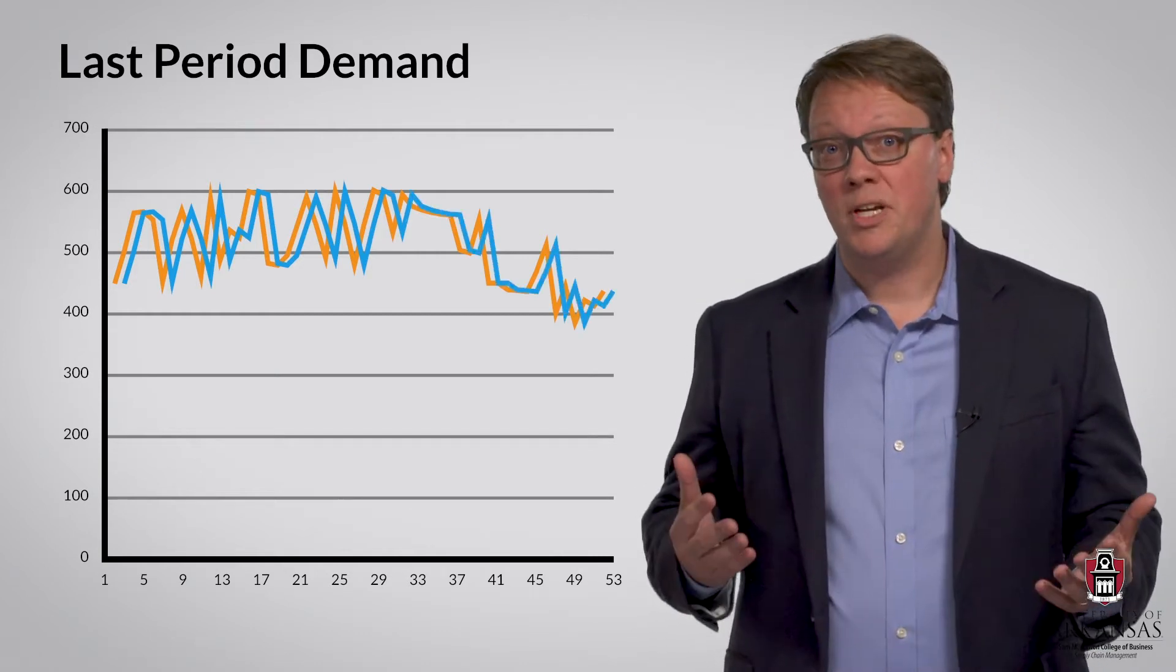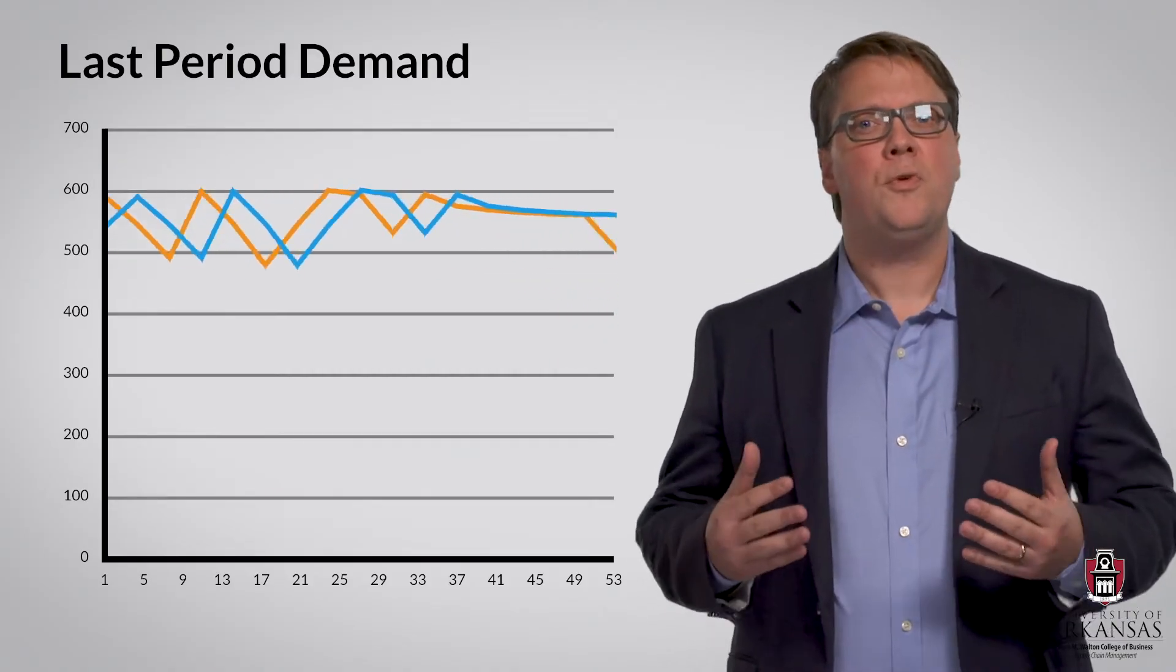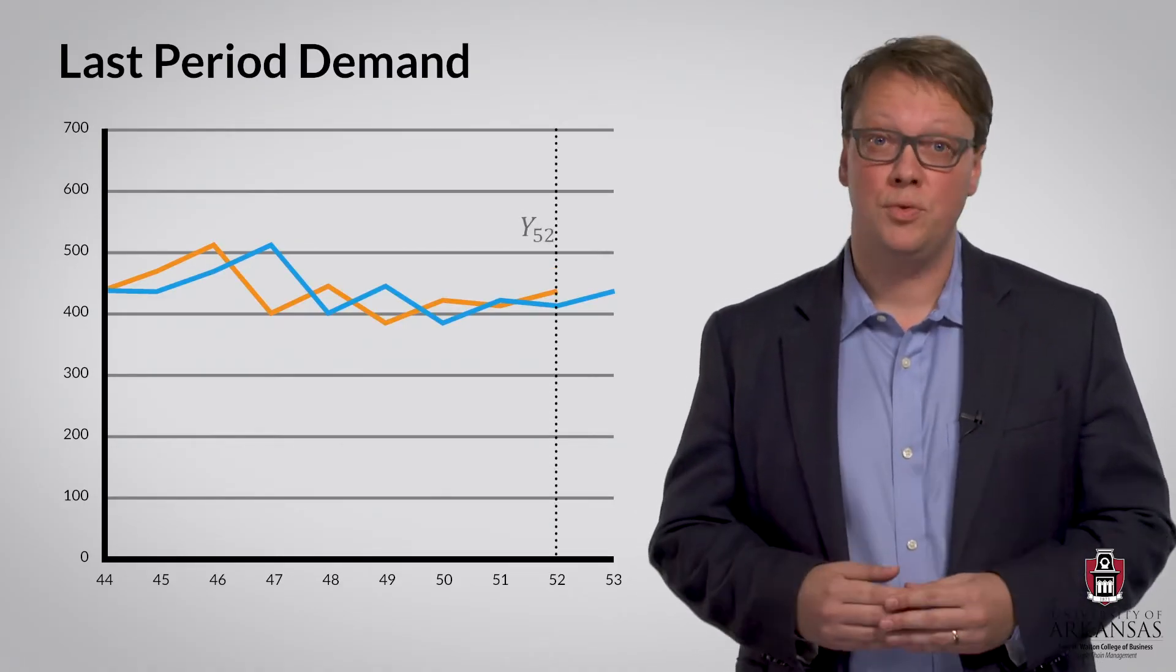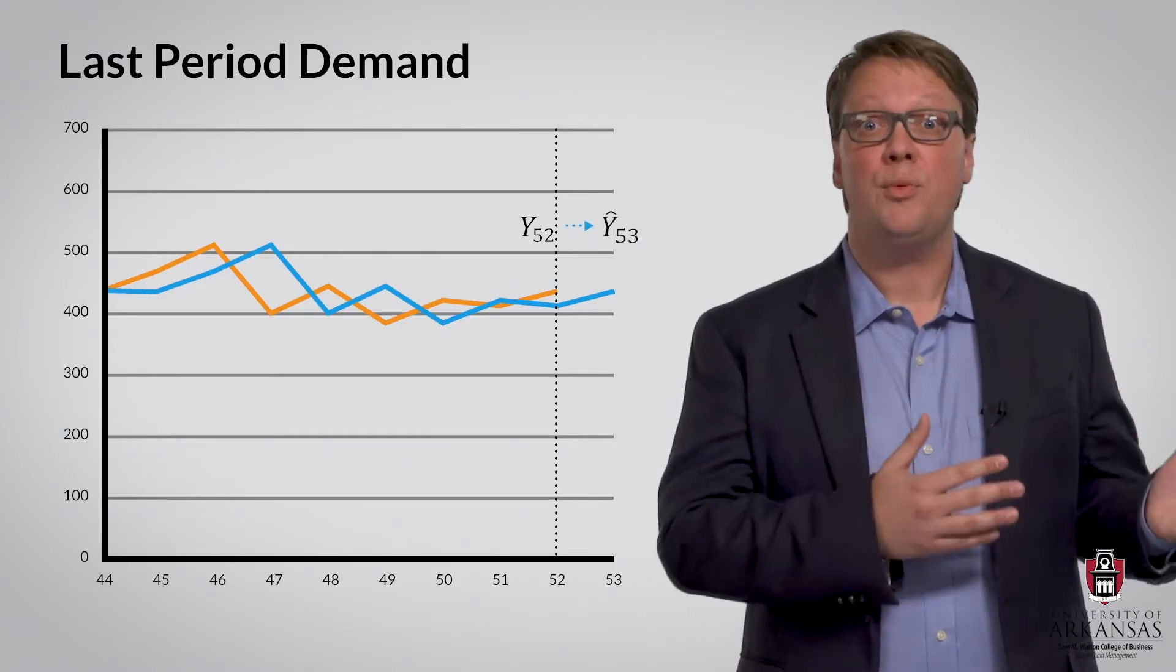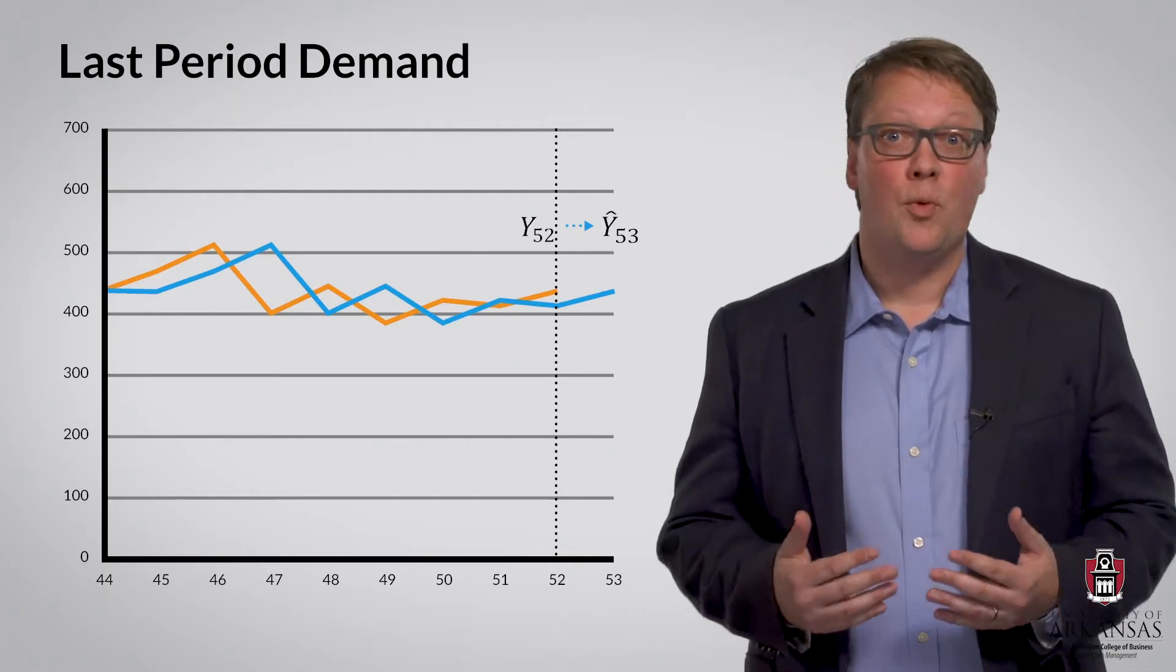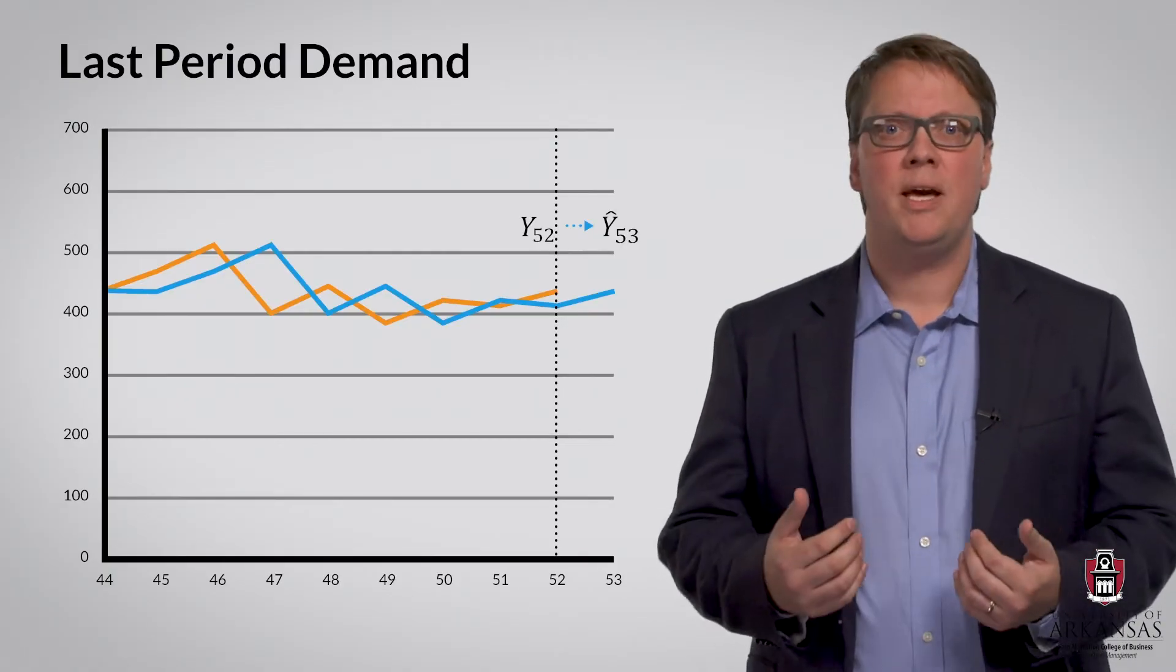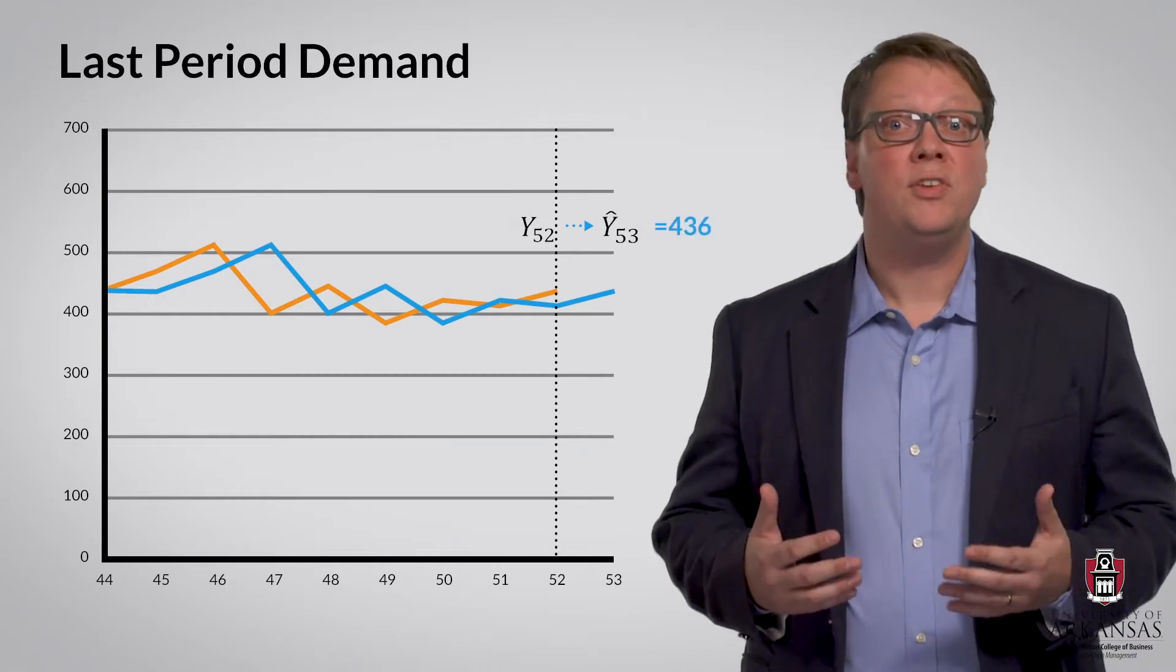This is illustrated by the blue line. Now, let's zoom in and focus on the last few weeks of this data set. First, we are currently at the very end of the year in week 52, and we want to develop a forecast for week 53. According to the last period demand forecasting method, the forecast for week 53 will be equal to actual demand for week 52, which was 436 units.